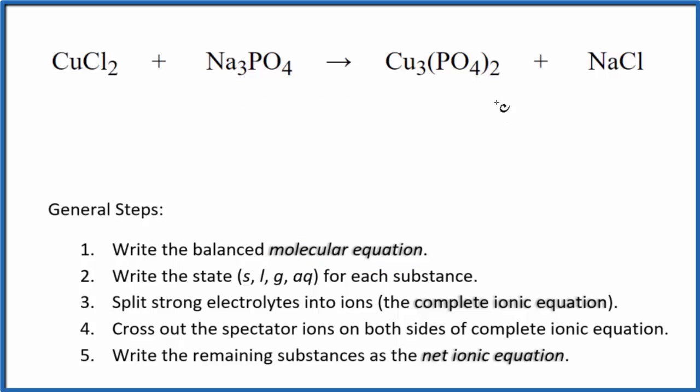I can see that I have three coppers here and just one here. I'm going to put a 3 in front of the copper chloride. Now I have three times two, six chlorine atoms and only one here. Let's put a 6 here. Six sodiums, just three sodiums here. I'll put a 2 here. And that's it. This is the balanced molecular equation.